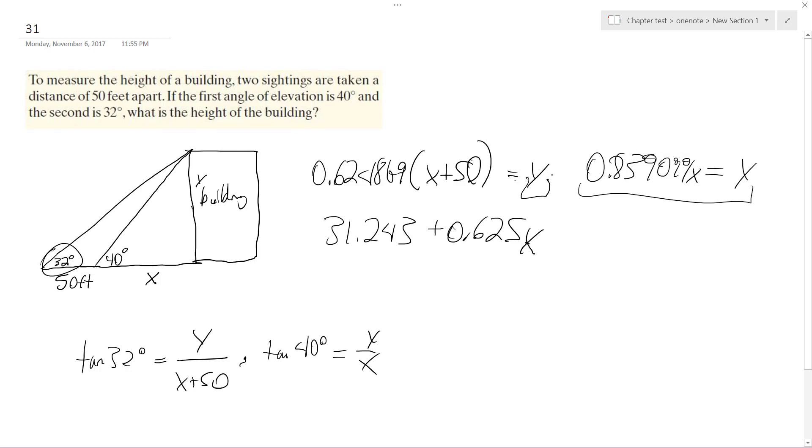Because y is the same in both of these, I can drop the y's and set these equal to each other. So this is equal to 0.839x. So then I separate this so 0.839x minus 0.625x. I get x is going to be equal to approximately, let me get my calculator out. So what I get roughly is 145.995, which is essentially just 146.